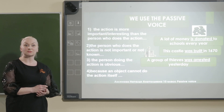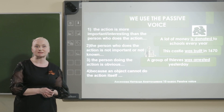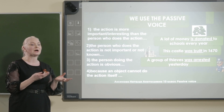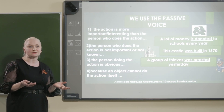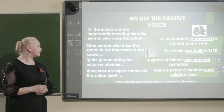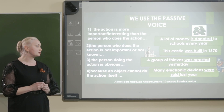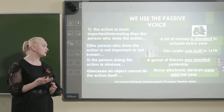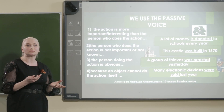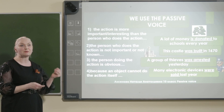The next case is when the person doing the action is obvious. For example: a group of thieves were arrested yesterday. Группа воров была арестована вчера. Who did it? Кто это сделал? It's obvious that it was done by police, because just only police have such duties. And the next: because an object cannot do the action itself. For example: many electronic devices were sold last year. Могут ли электронные девайсы себя продать? No — so it should be done by somebody. That's the sample of passive voice.